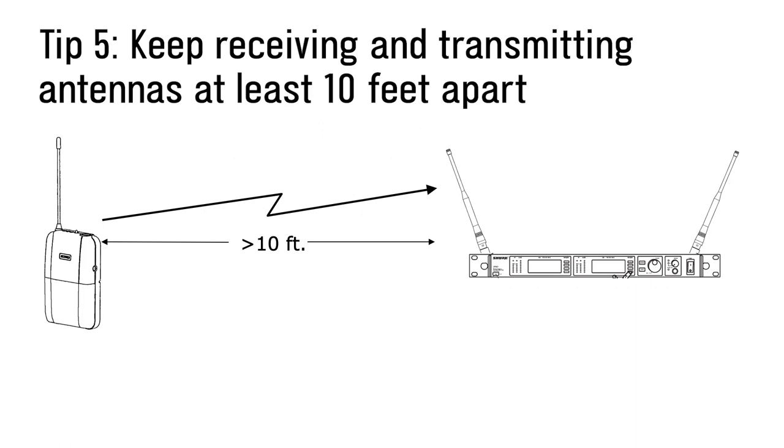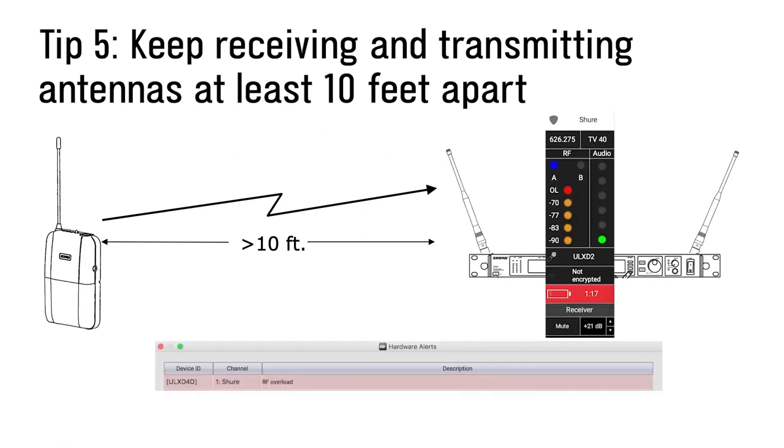Finally, number five, it is actually possible for your transmitter to be too close to your receiver. We generally recommend that transmitting antennas and receiving antennas are at least 10 feet apart. Otherwise, you might have an RF overload.